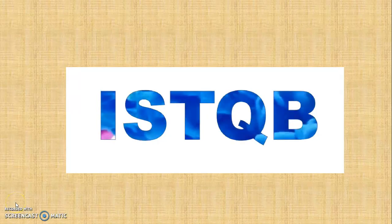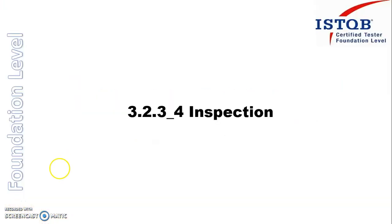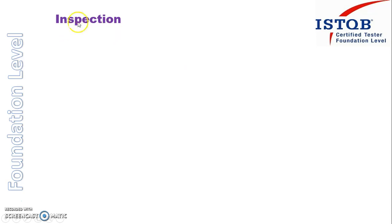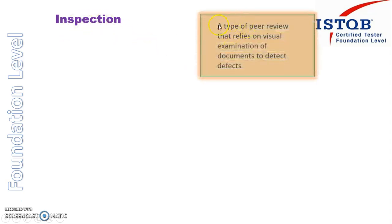Welcome to ISTQB foundation level syllabus. Today we are going to see the last review type, which is the inspection. We first saw the informal, then walkthrough, then technical review, and the last one is the inspection. The definition of inspection is: it is a type of peer review that relies on visual examination of documents to detect defects. So it visually examines all the documents in order to find defects.